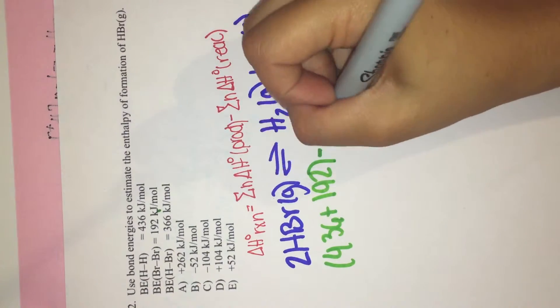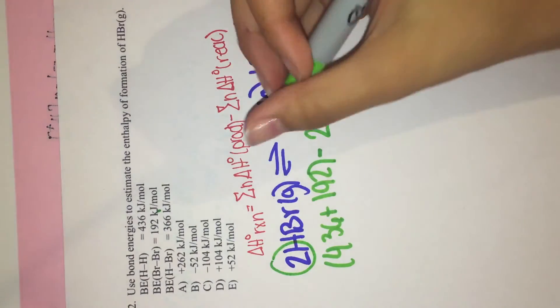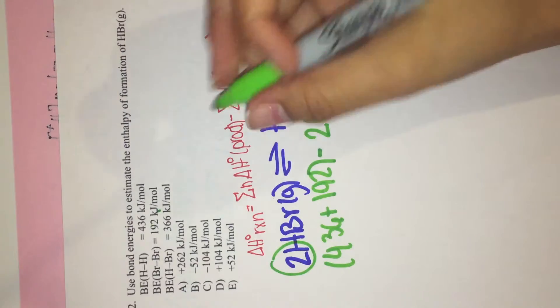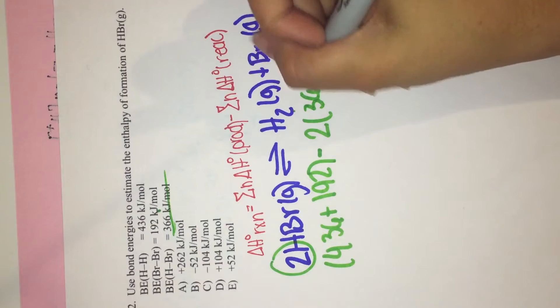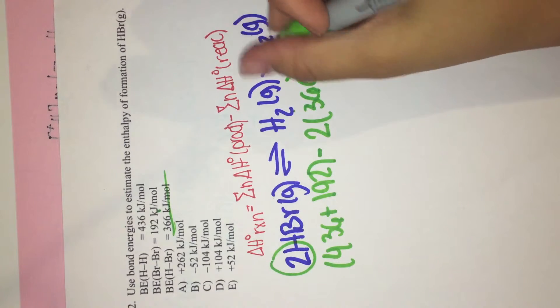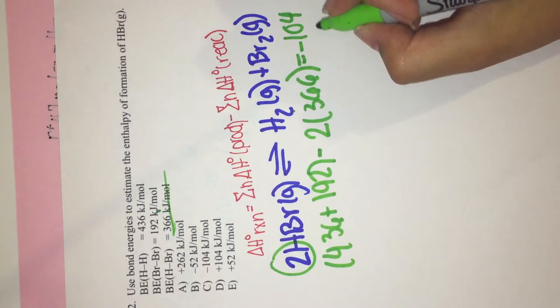Minus 2, because there's 2 moles, times 366, which gives you negative 104 kilojoules.